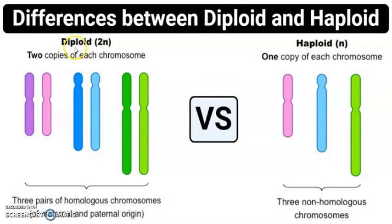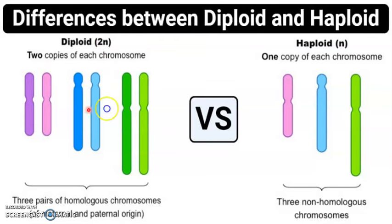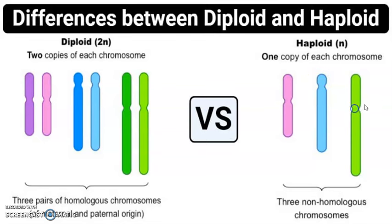Here are some pictures to help reinforce that. Diploid, or 2n, means two copies of each chromosome type. In this example there are three chromosome types — you can tell based on the difference in sizes — and there's a pair for each type. So the 2n value for this example would be 6: two times three unique types equals six. Haploid is just n, so a sperm or egg cell would have just one version of these three types — three chromosomes, one version for each potential type.